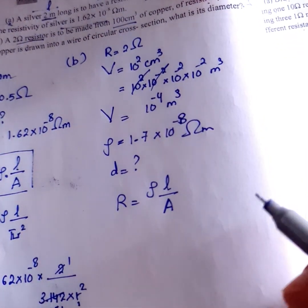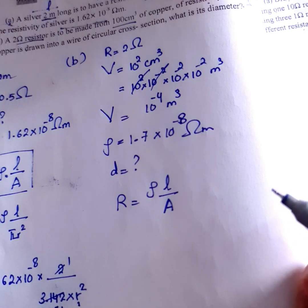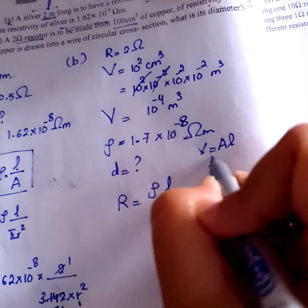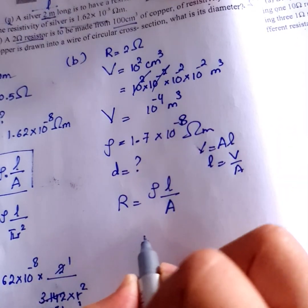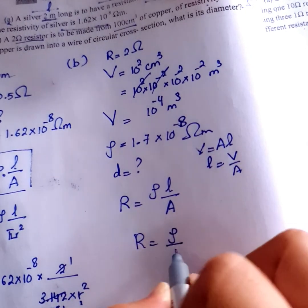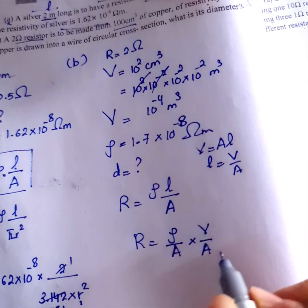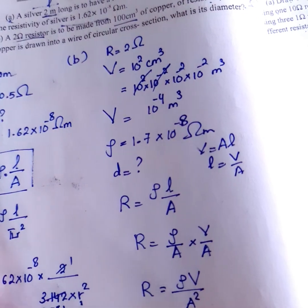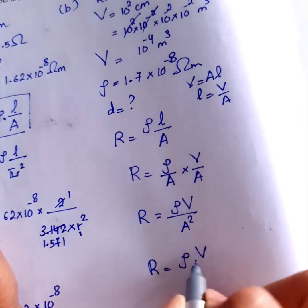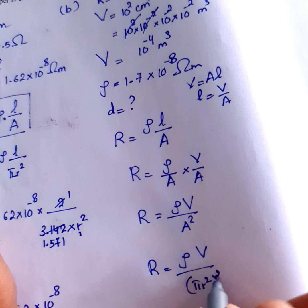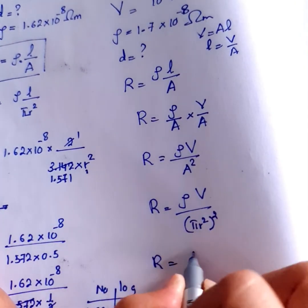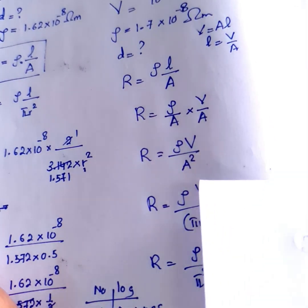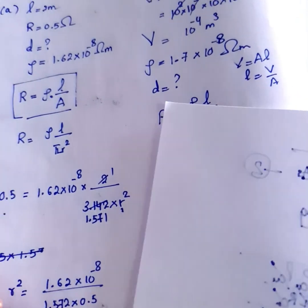We use the resistivity formula, which represents the resistivity and the cross-section. Here is the method. R equals rho times L over A. R equals rho V over A. I equal to rho V1, integral to r4.